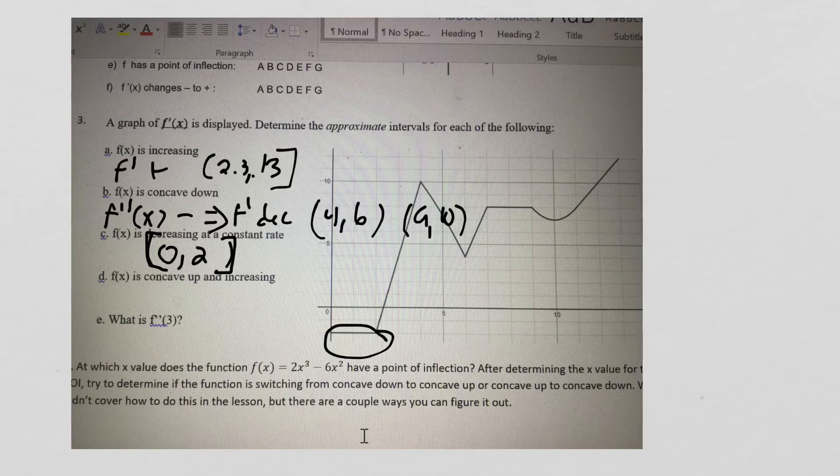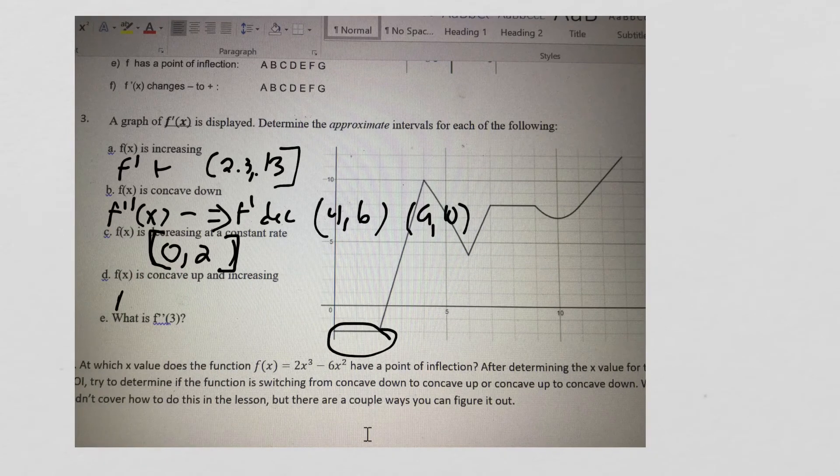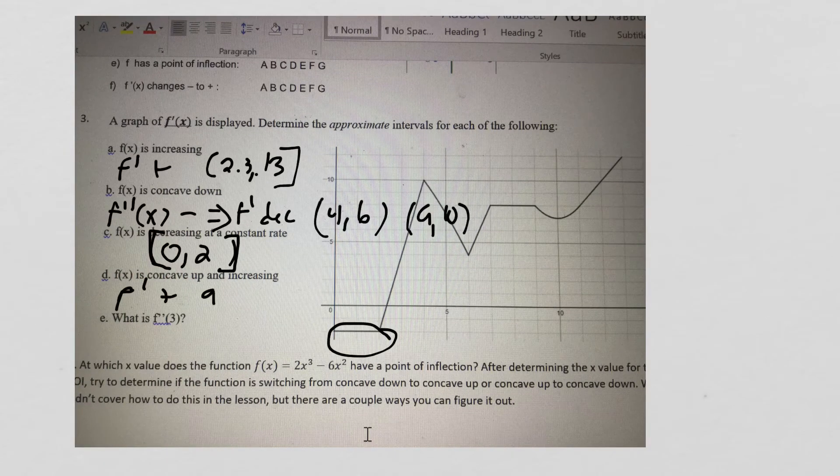f of x is concave up when f' is increasing because f double prime would be positive. And so f of x is concave up and increasing is when f' is positive and increasing.